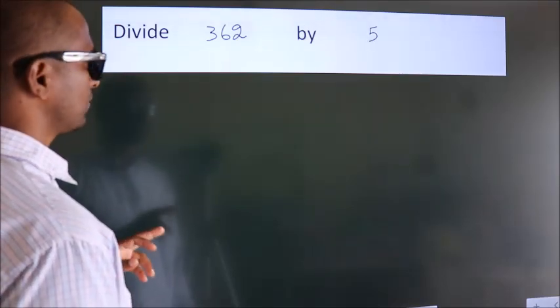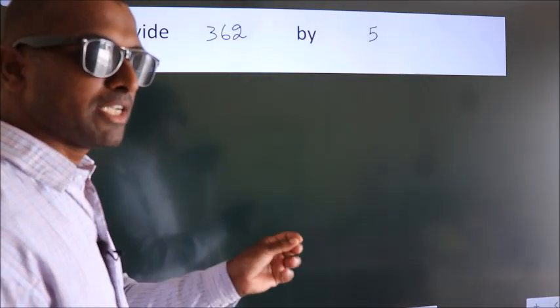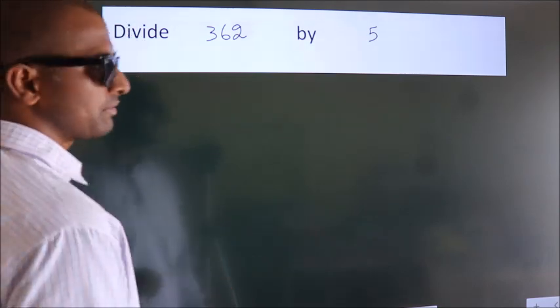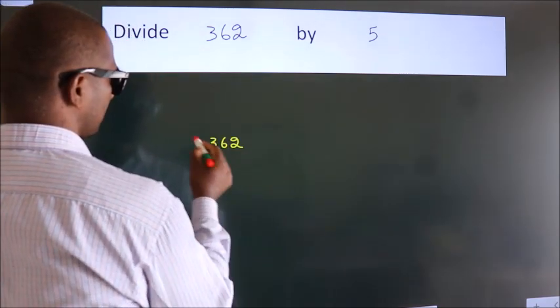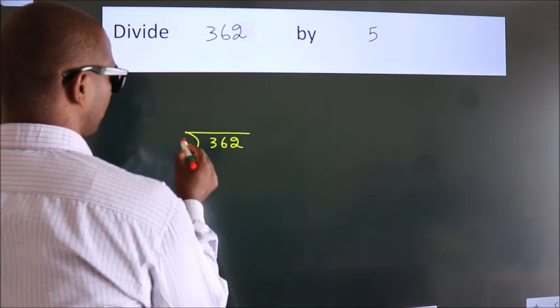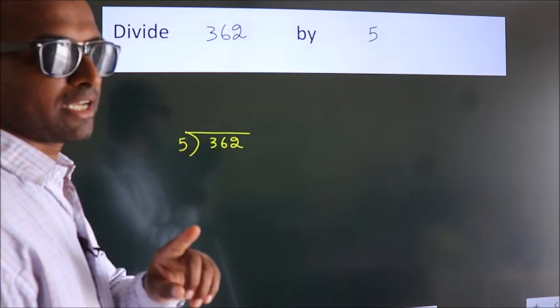Divide 362 by 5. To do this division we should frame it in this way. 362 here, 5 here. This is your step 1.